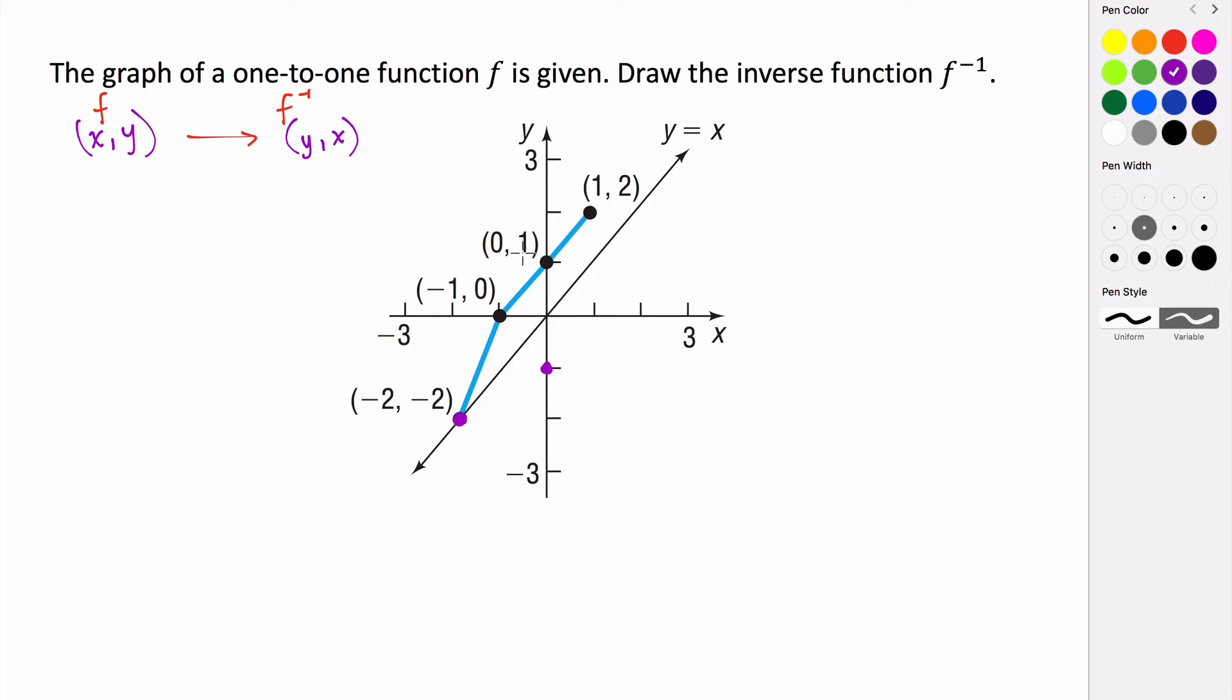(0, 1) is on the original function, so (1, 0) should be on its inverse, here. And then (1, 2) is on the original function, so (2, 1) should be on the inverse. This point here should be on the inverse, this point here.